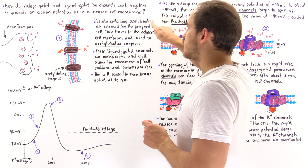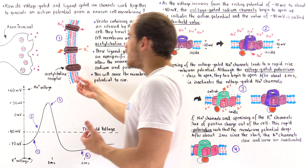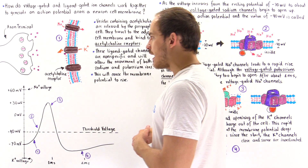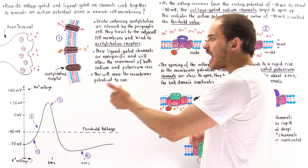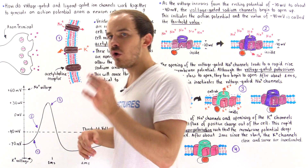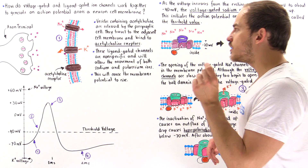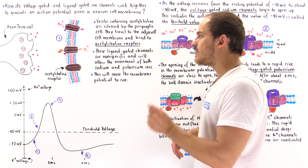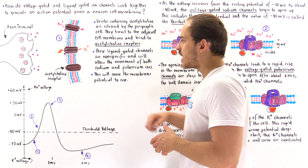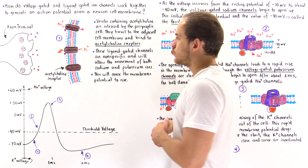These vesicles containing acetylcholine are released into the synaptic cleft. The acetylcholine travels along that synaptic cleft and ultimately binds onto special ligand-gated ion channels called acetylcholine receptors, which are these protein membranes shown here.